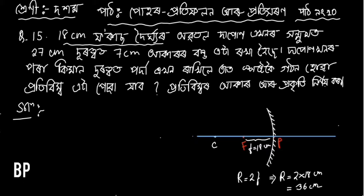We know that R is equal to 15cm. The diameter is 36cm. The diameter is about 1.5cm. This is about 7cm. Next, this is about 2cm.